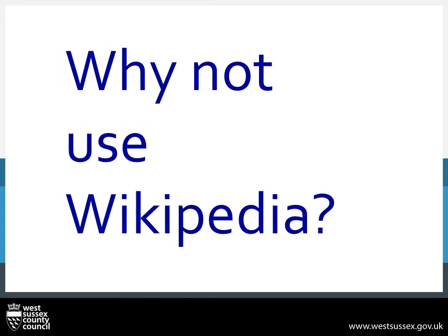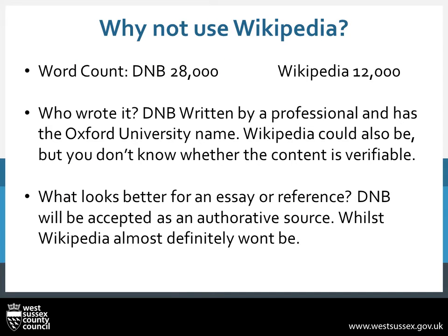So a question going through your head now though is: why not use Wikipedia? And it's a very good question. Well, DNB can actually hold a lot more information than Wikipedia. For instance, the Wikipedia article for our example, the Duke of Wellington, has only 12,000 words written, whilst the DNB version has 28,000. You also don't have any idea who wrote the Wikipedia article — you can look up the contributor but they are hidden by a pseudonym — whilst DNB is written by named specialist authors, some of which we've gone through earlier. And what will look better in a school report or a university essay? Oxford has a level of prestige and this carries over to their online resources.